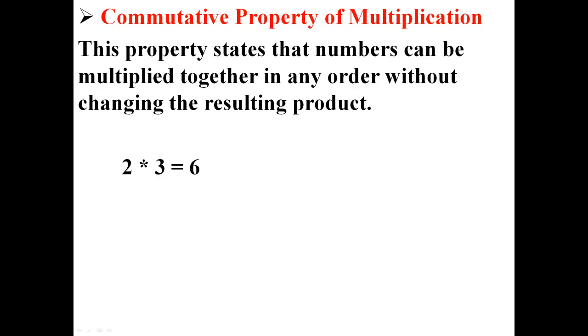For example, here we have the expression 2 times 3 equals 6. If we were to switch the numbers around and make it 3 times 2, our resulting product would still be 6.